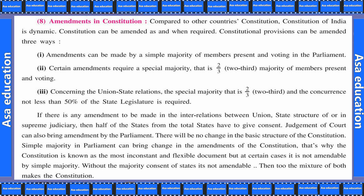Certain amendments require special majority — that is two-thirds majority of members present and voting. Ab kuch aise amendments hote hain jis mein khas majority ki zaroorat hoti hai, that is two-thirds majority of members present and voting.